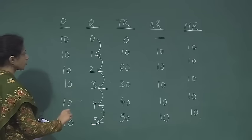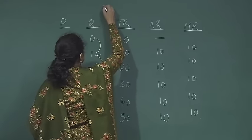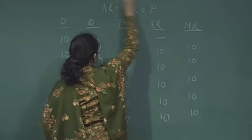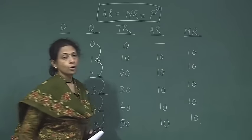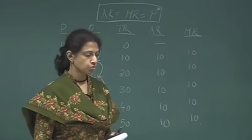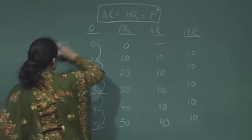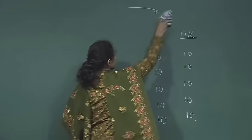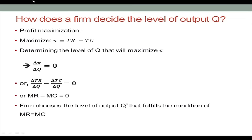We can see that for a perfectly competitive firm, average revenue equals price, and this holds true only for a competitive firm. Moving on — now that we know what the different forms of revenue look like, and that price is given, and we know the cost curves of the firm — how does a firm decide the level of output? How does it decide how much output to produce?